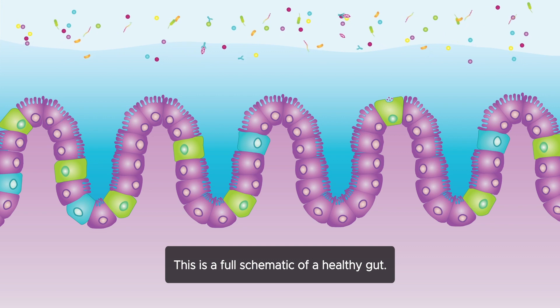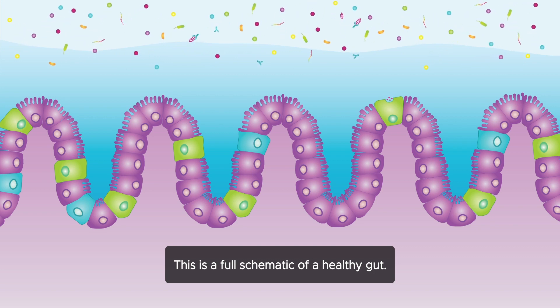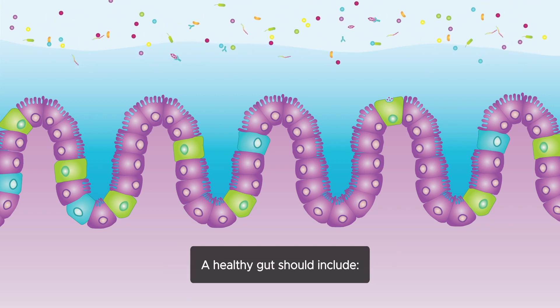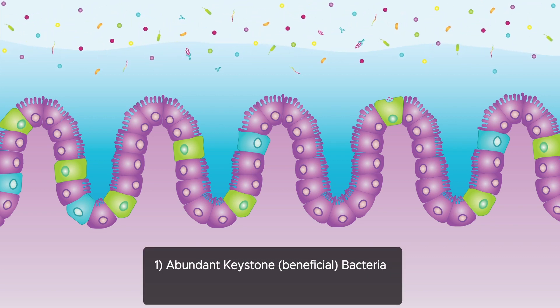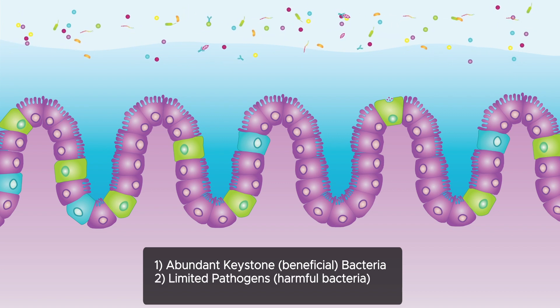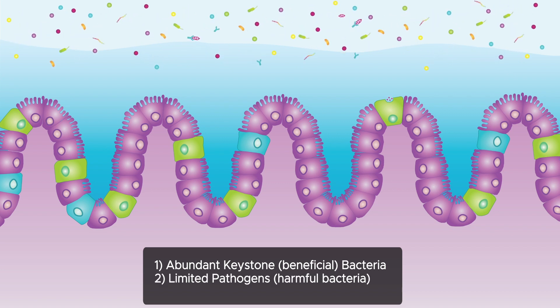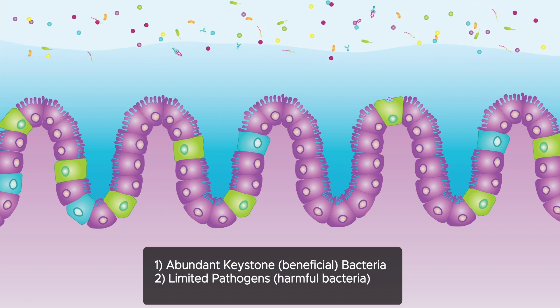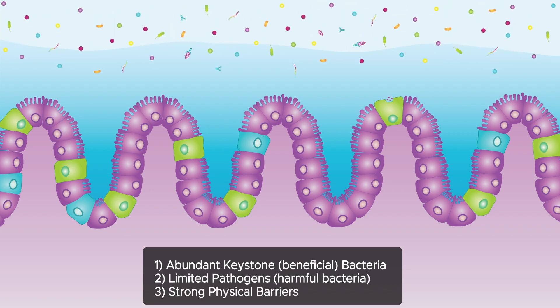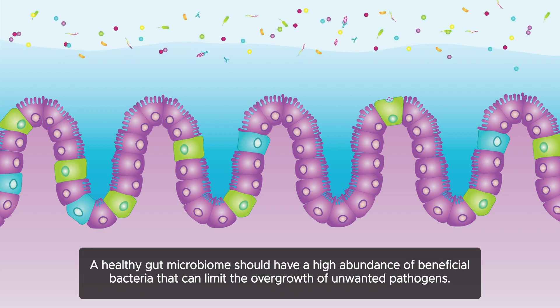This is a full schematic of a healthy intestine. A healthy intestine should include abundant keystone bacteria, limited pathogens or potentially harmful strains, and strong physical barriers.